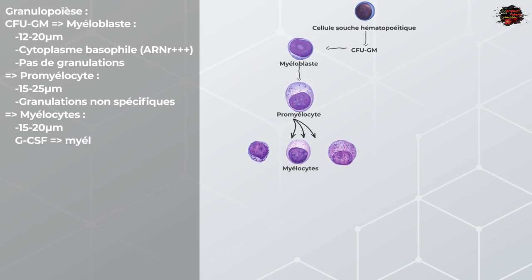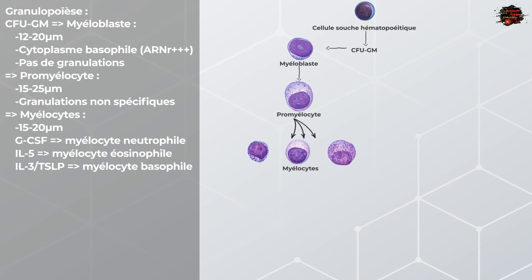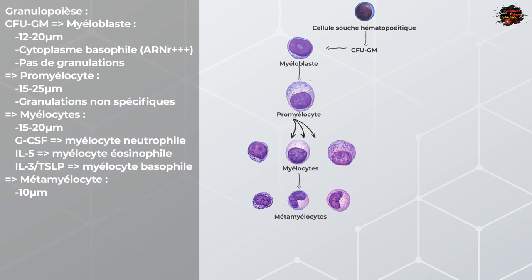Selon le stimulus, on aura trois groupes de myélocytes, chacun précurseur d'un type de granulocyte. Sous la stimulation du G-CSF, Granulocyte Colony Stimulating Factor, on aura des myélocytes neutrophiles. Sous l'action de l'IL-5, l'interleukine 5, il en résultera des myélocytes éosinophiles. Et enfin, sous l'action de l'IL-3 ou de la Thymic Stromal Lymphopoietin, abrégé TSLP, on aura des myélocytes basophiles. Ces cellules vont entamer une étape de maturation pour devenir des métamyélocytes, d'une taille d'environ 10 microns avec un cytoplasme moins basophile. Ce sont les précurseurs des trois types de granulocytes.